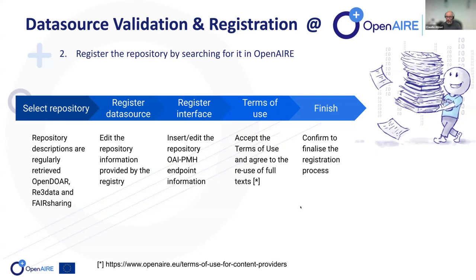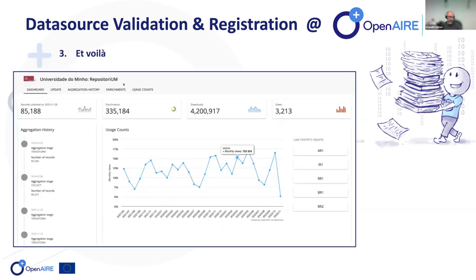Once a repository is selected, it's possible to edit the repository information, fill in missing fields, register an interface indicating the OAI-PMH endpoint, and accept the terms of use for metadata harvesting and full-text reuse. OpenAIR runs text and data mining algorithms on open access publications to derive added-value content. This finalizes the registration process, resulting in a repository-specific dashboard that shows what OpenAIR is doing with the repository's contents — the history of aggregations, the trend of usage counts, enrichment events, downloads and views, and more.